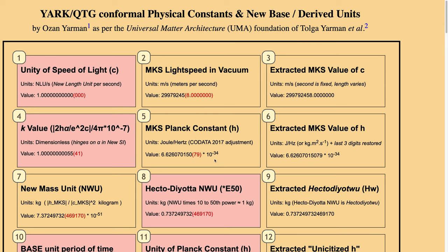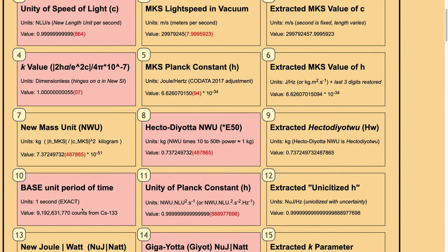In the fifth box, we have the Planck constant value in terms of Joule per Hertz, where I have restored the last three digits as per the CODATA 2017 adjustment, which resulted in the new SI 2019 determination. With the uncertainty parts restored for both light speed and the Planck constant, we have in the seventh box a new mass unit to unify — to unicitize — the Planck constant. This is almost 10 to the power of minus 51 orders of magnitude below the kilogram level.